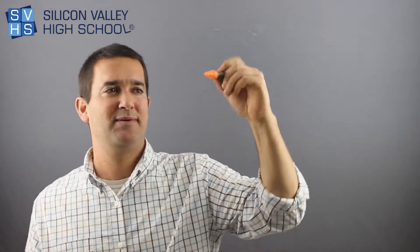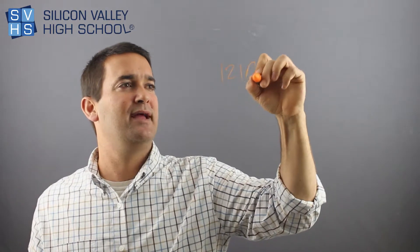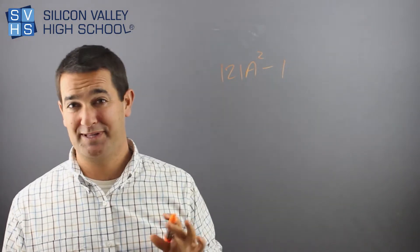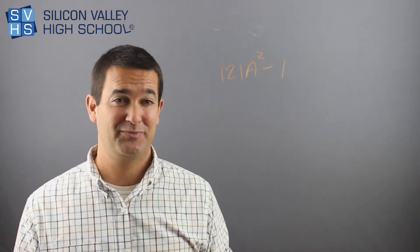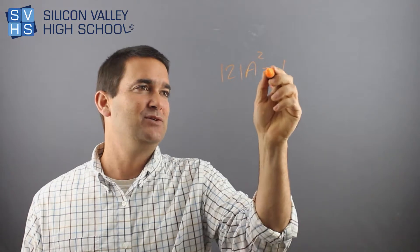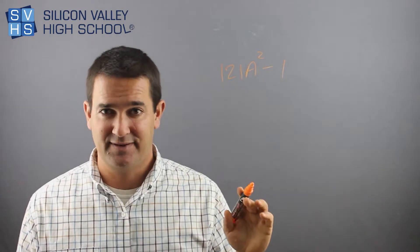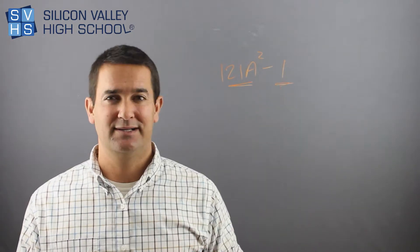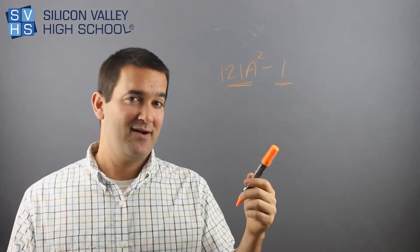So like this one, maybe you have 121a squared minus one. Like really that's actually super confusing. I do like that there's a minus sign. There's the difference part of difference of squares. Is this thing something squared? And is that something squared? And they are.